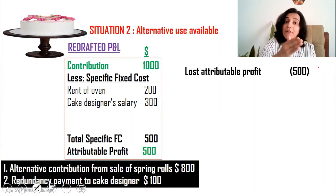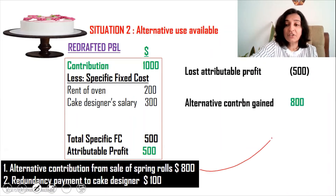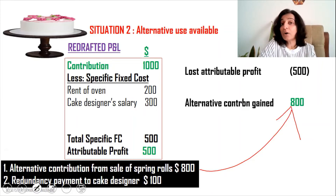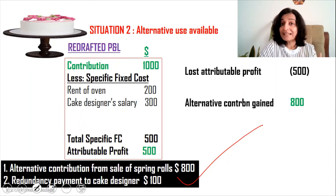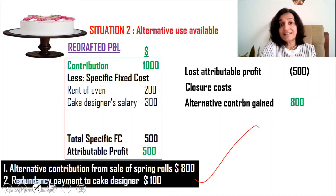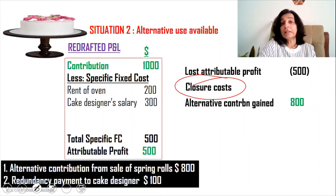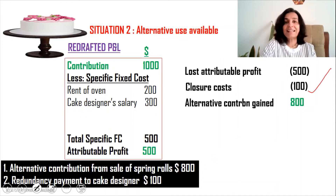If we close down the cake division, we can open the spring roll division and gain a contribution of $800. So the alternative contribution gain is $800. The next item is the redundancy payment of $100 to the cake designer, which is a relevant closure cost. Closure costs include redundancy payments and any penalties — all compiled under closure cost, which here amounts to $100, indicated in brackets as an expense.